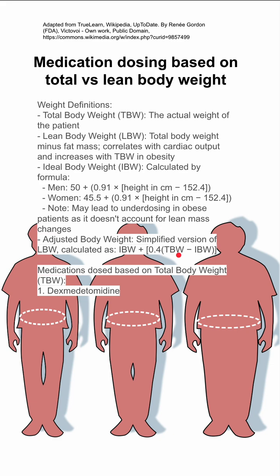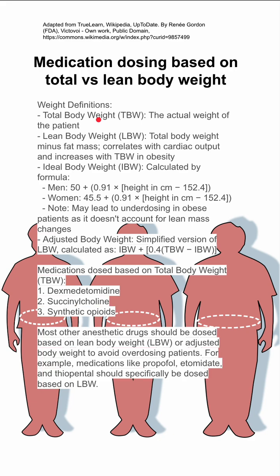Now some notes on dosing. There are some medicines that should be dosed based on total body weight. This includes dexmedetomidine like Precedex, succinylcholine, and synthetic opioids like fentanyl and remifentanil. Most other anesthetic drugs should be dosed based on lean body weight or adjusted body weight to avoid overdosing patients.